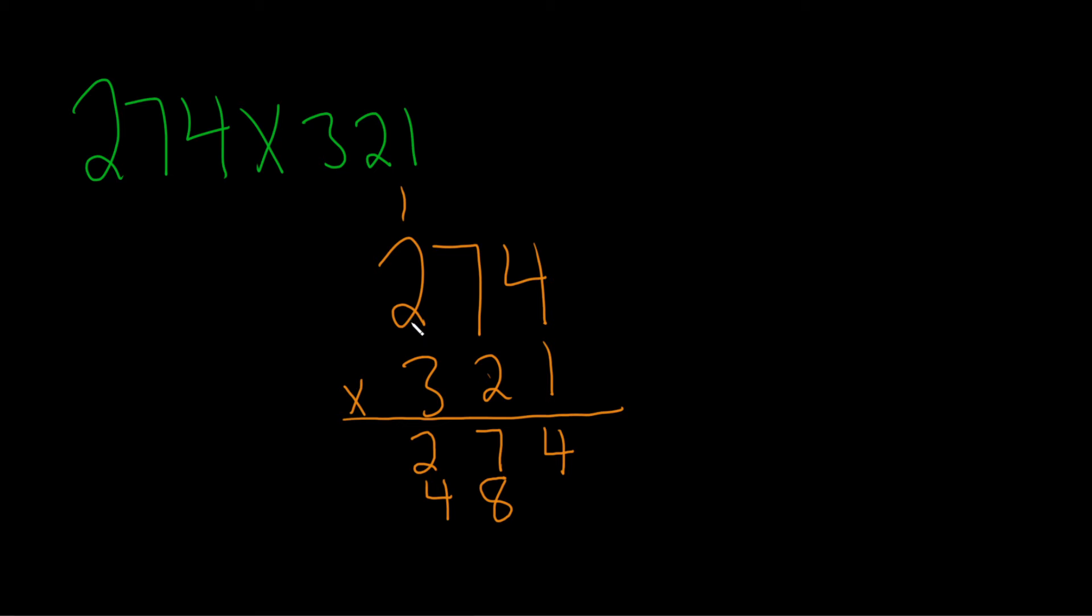2 times 2 is 4, 4 plus 1 is 5. Let's double check that. 2 times 4 is 8, we wrote it down here. 2 times 7 is 14, so we wrote the 4 here and carry the 1 up here. Then 2 times 2 is 4, and 4 plus 1 gives us 5, which is written down here.